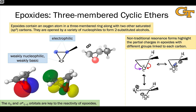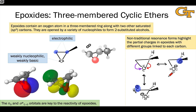With these resonance forms drawn, we can compare the importance of one versus the other. Where they differ — and where we should focus our attention — is the carbon bearing the positive charge. It's a primary carbon in the bottom resonance structure, but a secondary carbon in the upper right structure. Applying general rules for carbocation stability, the more substituted carbon is more stable with positive charge.